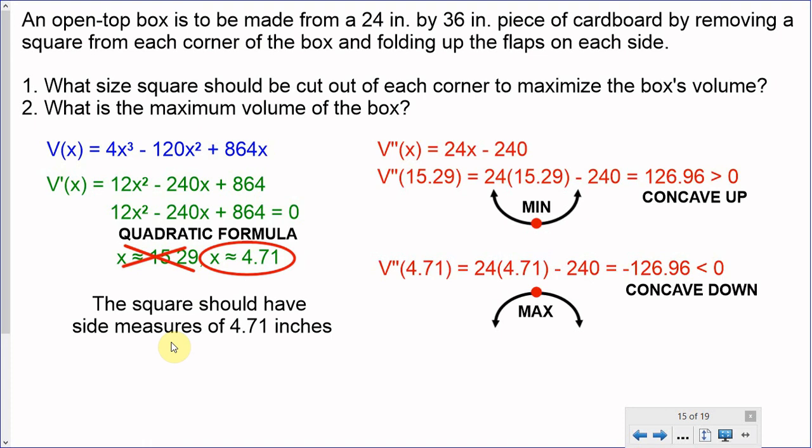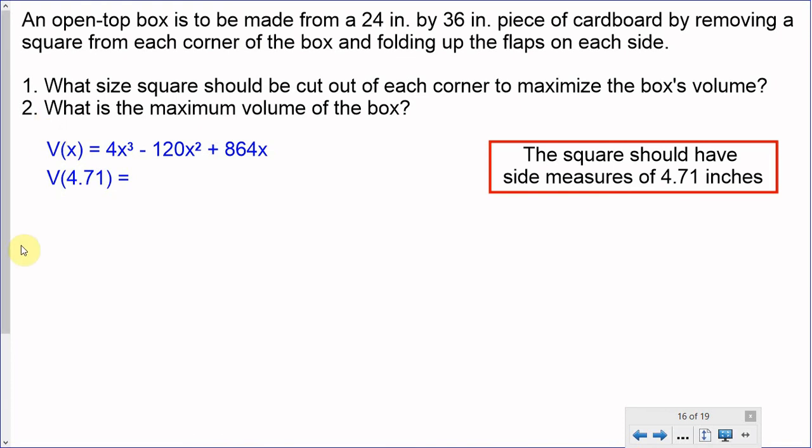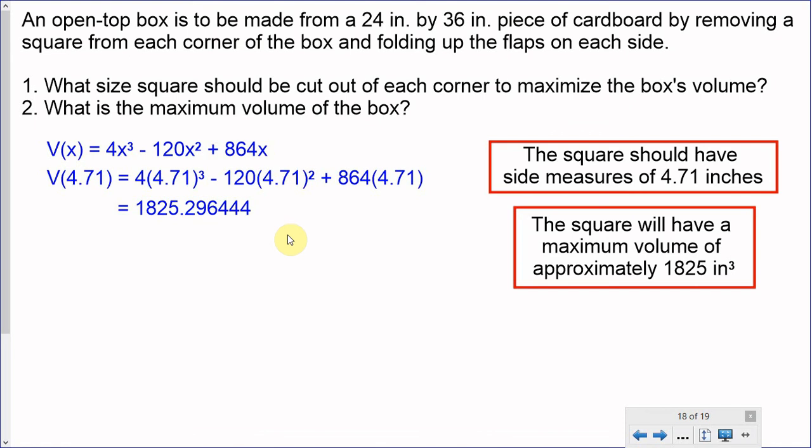How do we find the answer to question number two? What is the maximum volume of the box? Well, you see this volume function? You found something that might be helpful in this situation. You found out what that x is. That's 4.71. So let's plug 4.71 into that volume function. Let the algebra work itself out. And 1825.296444 is the result I get, which means the square will have a maximum volume of approximately 1825 inches cubed. That is the answer to the second question. What is the maximum volume of the box? The maximum volume of the box is approximately 1825 cubic inches.